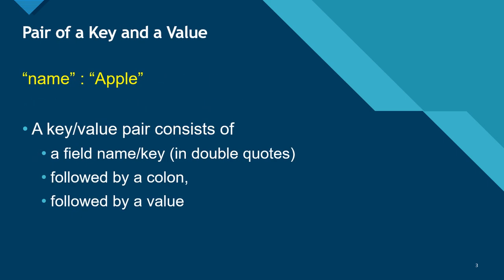Here you can see a key-value pair. A key-value pair consists of a key followed by a colon, which is then followed by a value. The key in JSON is always in double quotes. The value can be in double quotes if it is a string.